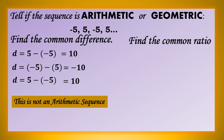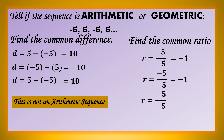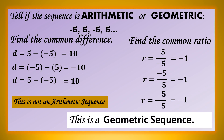Let us find the common ratio. I-divide natin yung second term sa first term: 5 divided by negative 5 is negative 1. Yung third term, i-divide natin sa second term: negative 5 divided by 5 is negative 1. Yung fourth term, i-divide natin sa third term: 5 divided by negative 5 is negative 1. So they have a common ratio. Therefore, this is a geometric sequence.